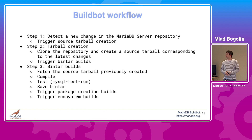Now let's talk about the whole MariaDB BuildBot workflow. In the first step, when a new change is detected in the MariaDB server repository, a source tarball creation build is triggered — the code is cloned and the source tarball is created. This tarball will be used by all subsequent builds, and it is now time to trigger the binary tarball builds. Step 3 involves creating binary tarballs: fetching the source tarball, compiling the code, and running the tests. In the end the binary tarball is saved, and we can trigger package creation builds and ecosystem builds.